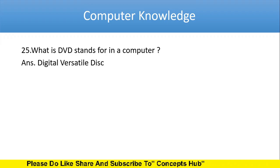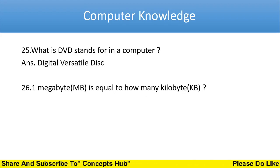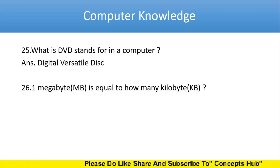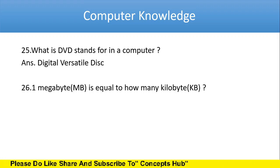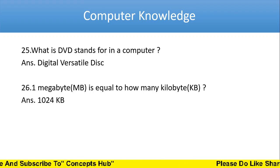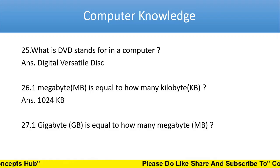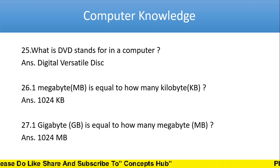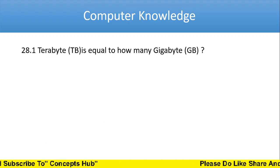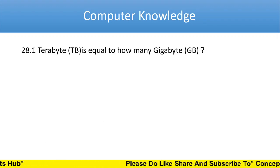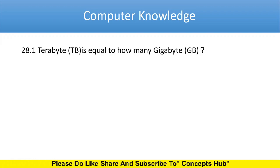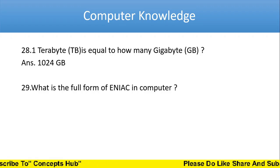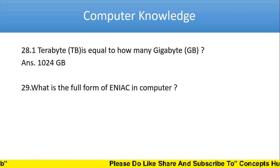The answer is Digital Versatile Disk. Next one: megabyte is equal to how many kilobytes? The answer is 1024 KB. Next one: one gigabyte is equal to how many megabytes? The answer is 1024 MB. Next: what is the full form of ENIAC in computer?